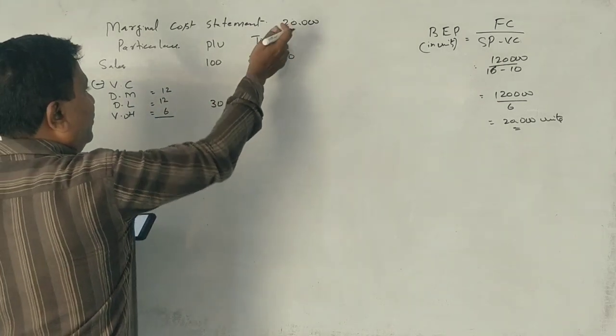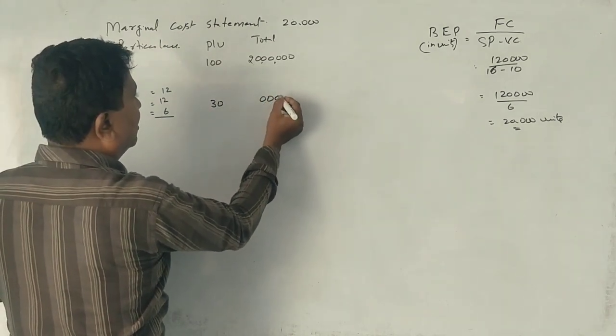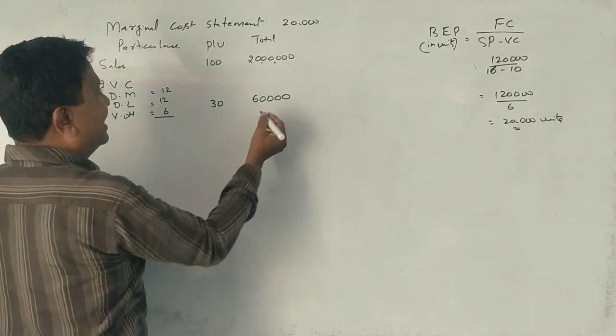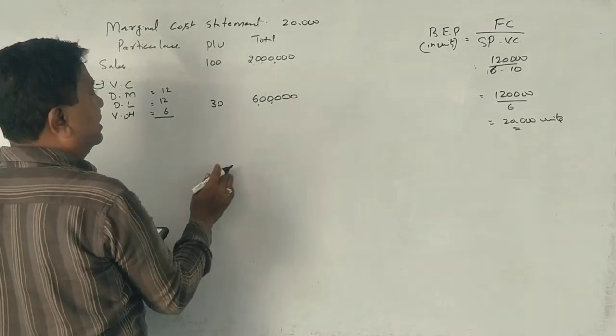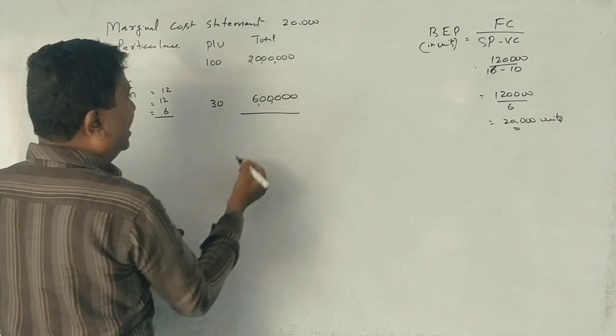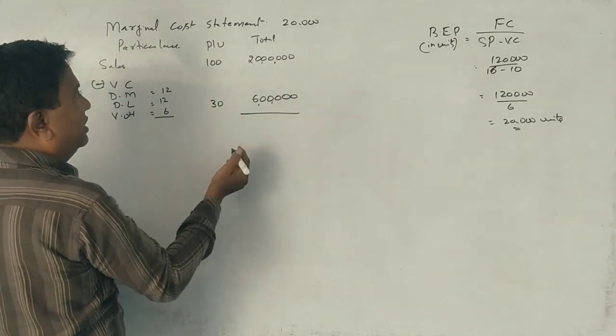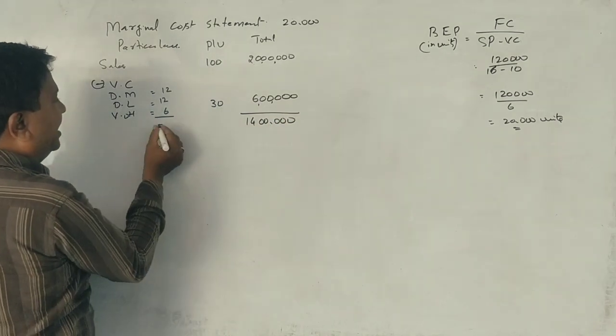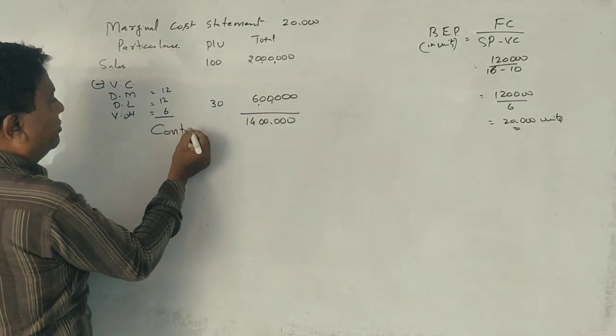30 into 20,000 is 4 zeros. Three to six are 6. 6 lakhs. 6 lakhs is 6 lakhs. Over it is 14 lakhs.